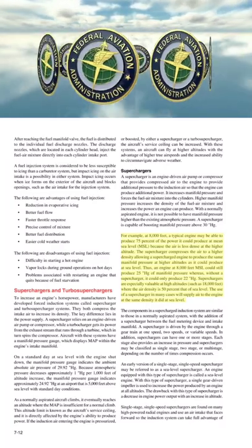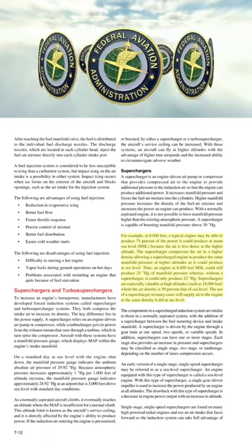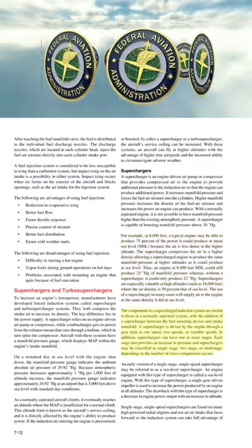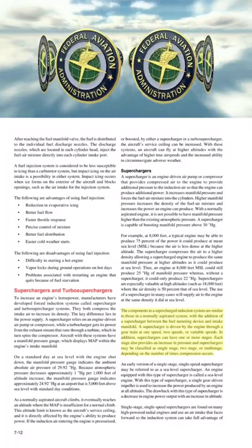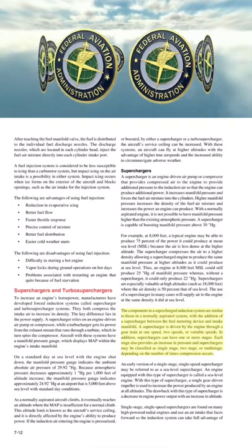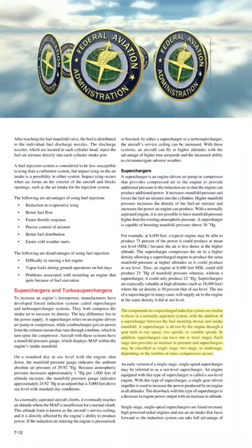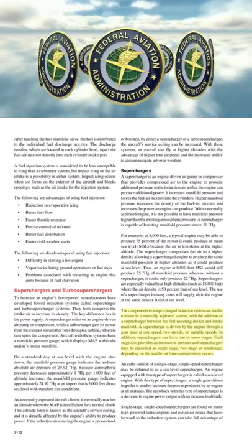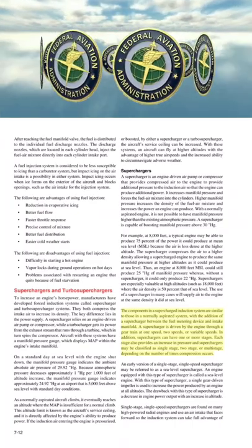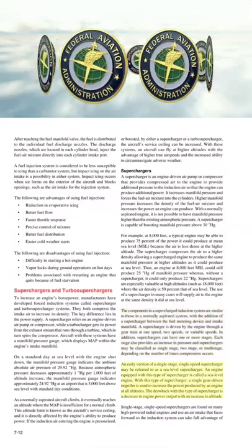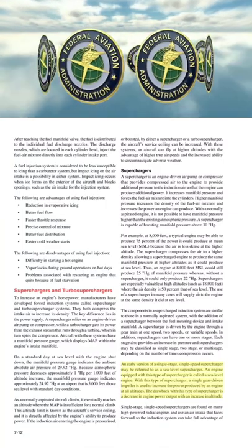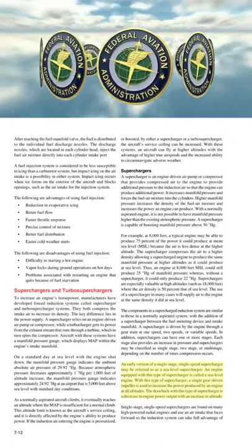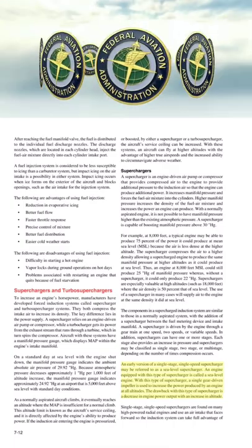Superchargers are especially valuable at high altitudes, such as 18,000 feet, where air density is 50 percent of sea level. The use of a supercharger can supply air to the engine at the same density as at sea level. In a supercharged induction system, a supercharger is added between the fuel metering device and intake manifold. A supercharger is driven by the engine through a gear train at one speed, two speeds, or variable speeds, and can have one or more stages. An early version, the single-stage single-speed supercharger, may be referred to as a sea-level supercharger. With this type, a single gear-driven impeller increases power at all altitudes, though power output decreases with increased altitude.